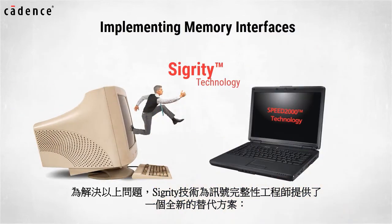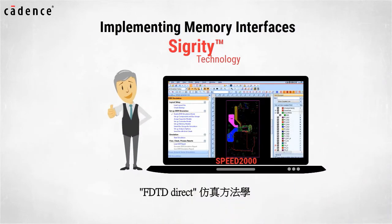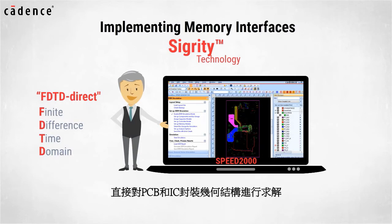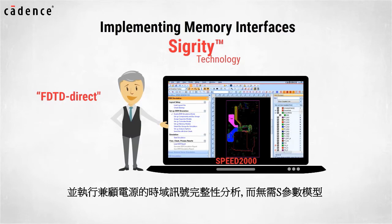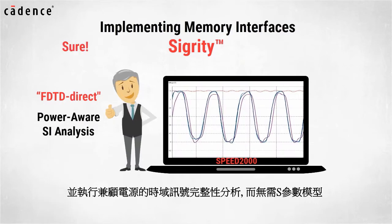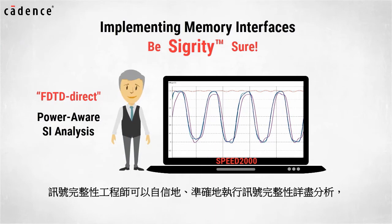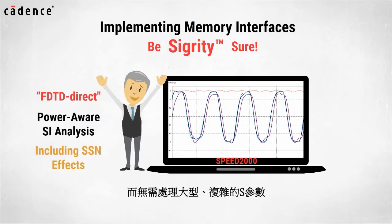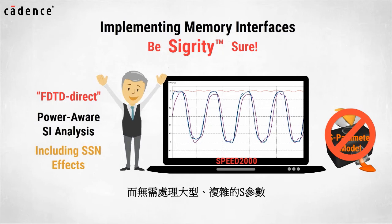With Sigrity, SI engineers have an alternative method. Our FDTD direct simulation methodology uses our unique hybrid solver in combination with our finite difference time domain, or FDTD, engine, which solves PCB and package geometries directly and performs power-aware SI analysis in the time domain without S-parameters. Signal integrity engineers can confidently and accurately perform their detailed SI analysis including SSN effects without having to process large complex S-parameters.